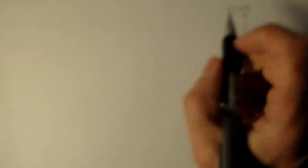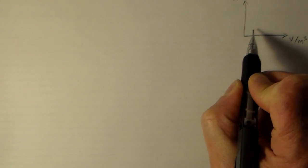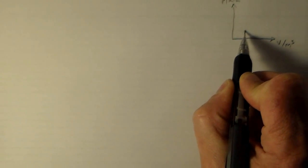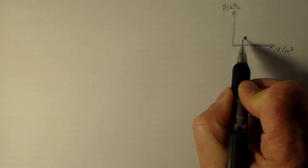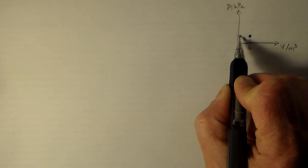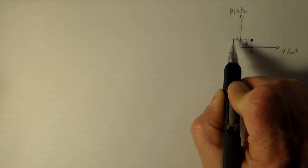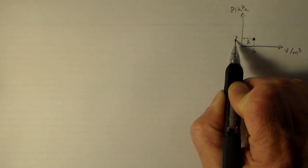And so I'd like to look at a simple triangular cycle that looks something like this. Alright, so we start at point A, which has a volume of 6 cubic meters and a pressure of 2 kilopascals.